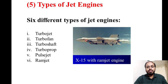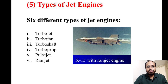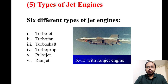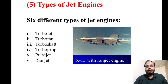The fifth point is the types of jet engines. There are six types: turbojet engine, turbofan engine, turboshaft engine, turboprop engine, pulse jet engine, and ramjet engine. In the figure, the X-15 is given as an example of a ramjet engine. Let's look at each engine briefly, not in depth, but for a small overview of each.